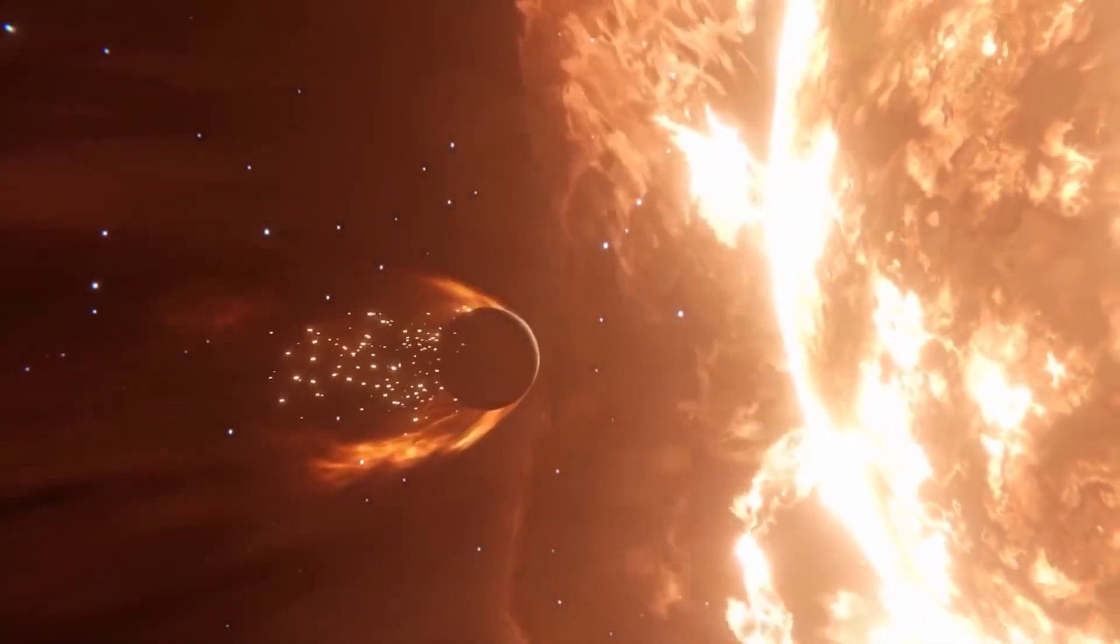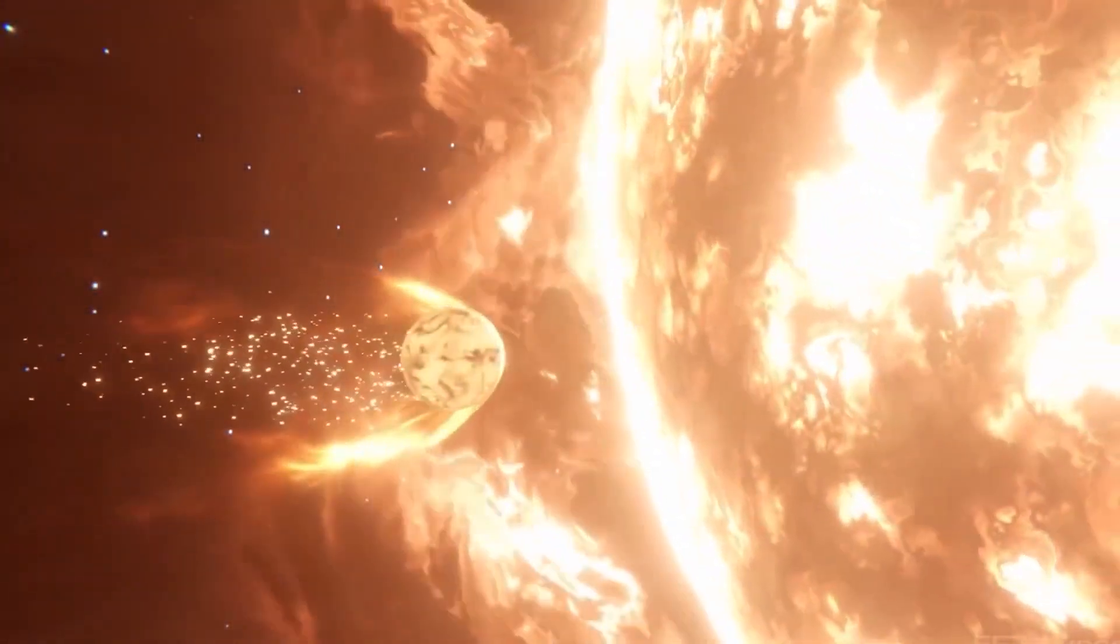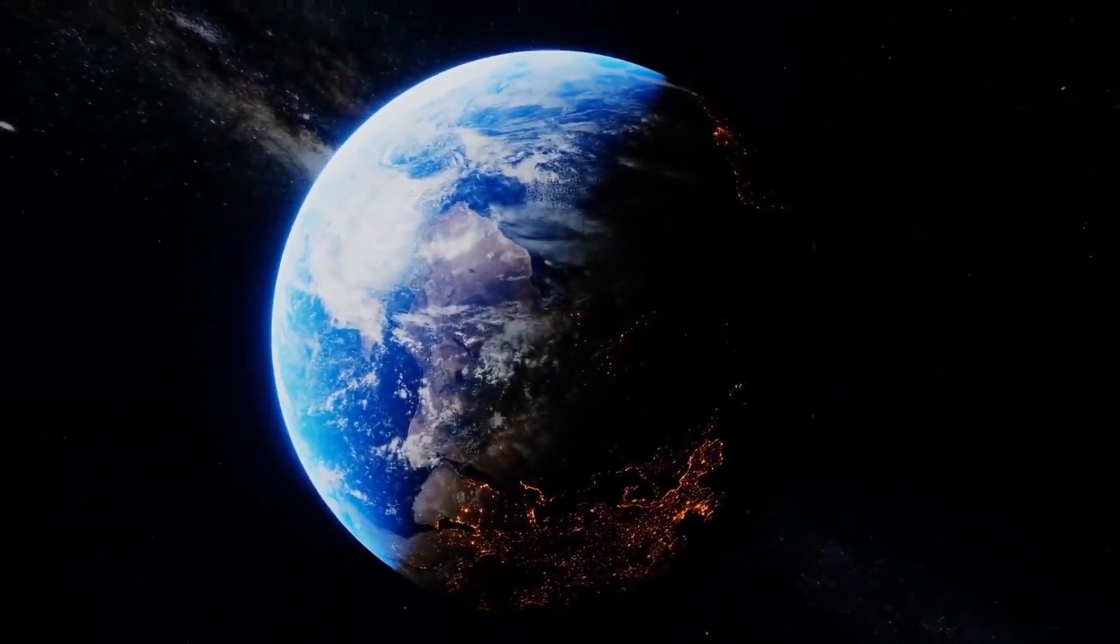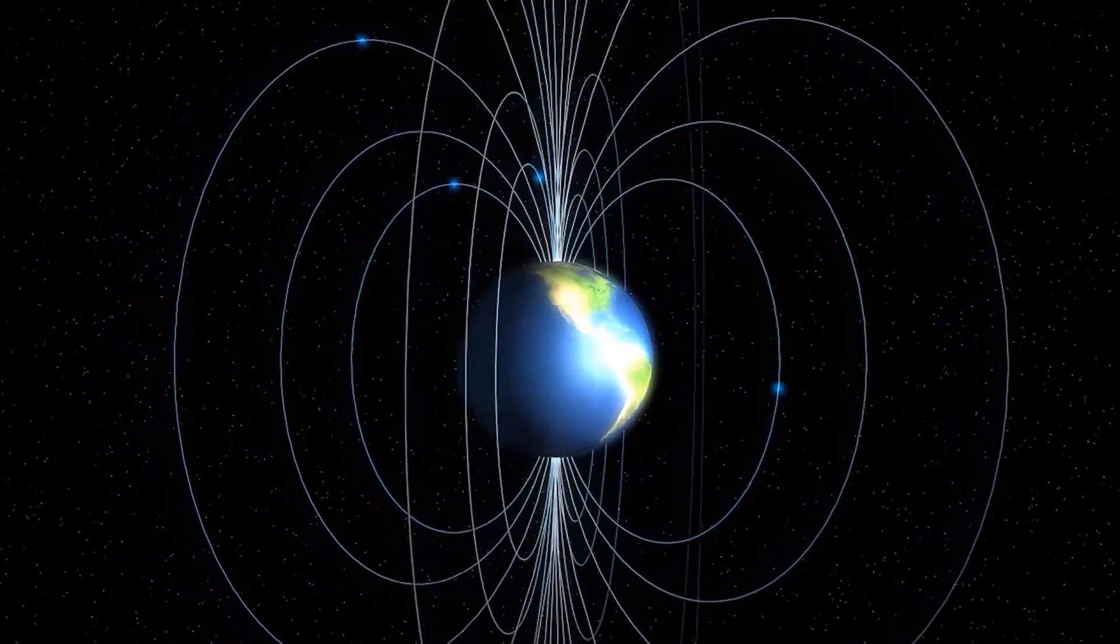But you should only worry about a supernova only if it occurs about 60 light-years from Earth. If that happens its intense cosmic ray could destroy our protective ozone layer, which would allow increased levels of harmful ultraviolet radiation from the sun.